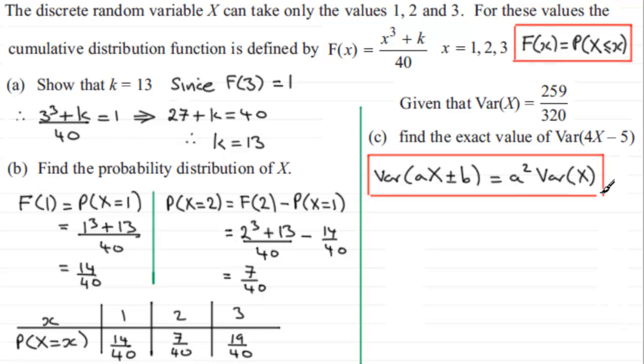So putting that idea into what we have here, we've therefore got the variance of 4X minus 5 is going to be equal to 4 squared times the variance of our random variable X. And so we've got 4 squared, which is 16, 16 multiplied by 259 over 320. And if you work this out, what you end up with is 259 over 20. I hope that's given you an idea, if you're stuck, on how to do this problem.